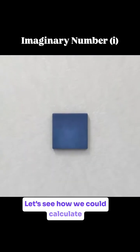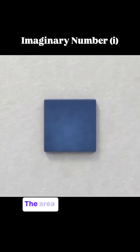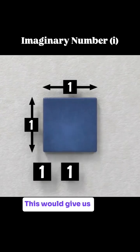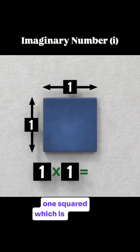With this in mind, let's see how we could calculate the area of the squares in the first place. The area would be the length times the width, which are both 1. This would give us 1 times 1, or 1 squared, which is positive 1.